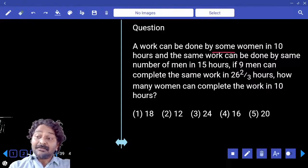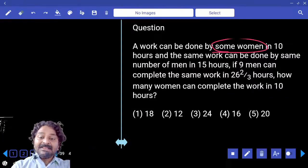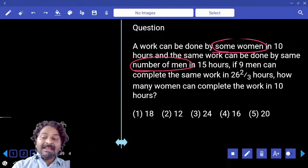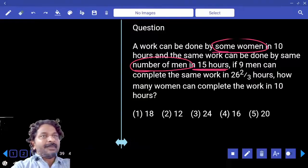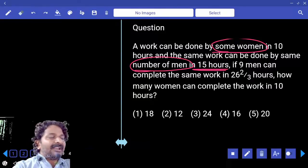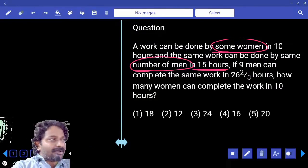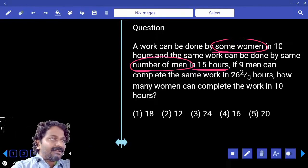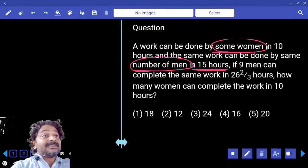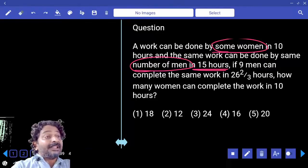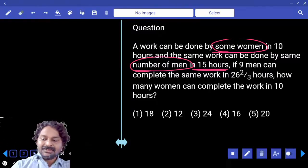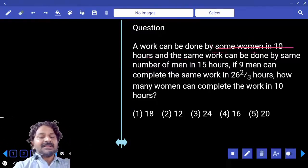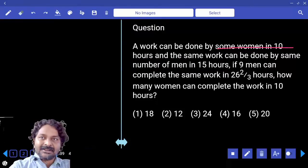So, whatever number of women we have here in the information, same number of men can complete the work in 15 hours, correct? So, the question answer is 10 hours complete, how many women can be done by 15 hours? How many men can be done by 15 hours? So, let's forget about women and concentrate only on men. Is that okay?